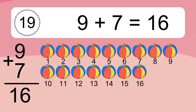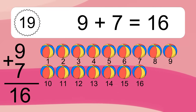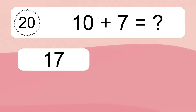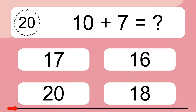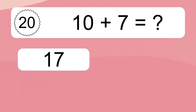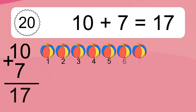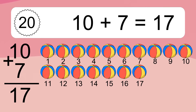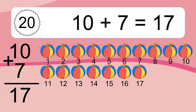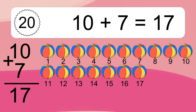6, 7, 8, 9, 10, 11, 12, 13, 14, 15, 16. 10 plus 7 equals what? 10 plus 7 equals 17. Let's count it. 1, 2, 3, 4, 5, 6, 7, 8, 9, 10, 11, 12, 13, 14, 15, 16, 17.